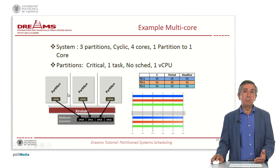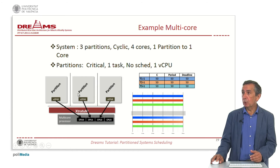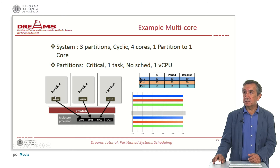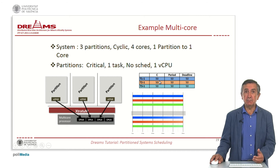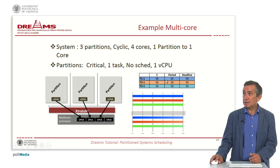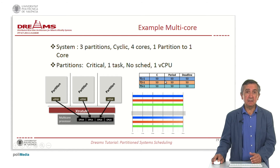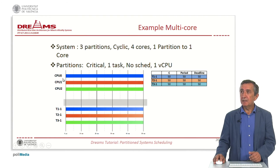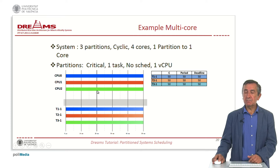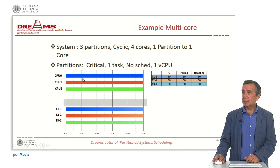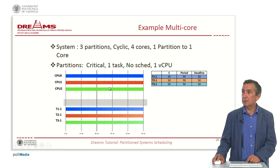Another example with multicore is simpler: three monocore partitions, each to be executed on one core. In that case it is straightforward to define a server associated to each partition with a period and a budget — in this case the same value — so the same partition always executes on a given core, allocating a partition to the full execution of a CPU.